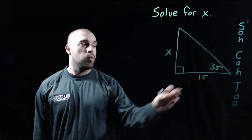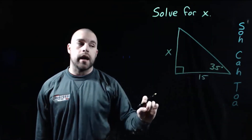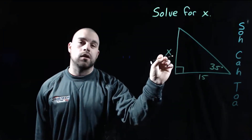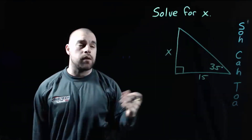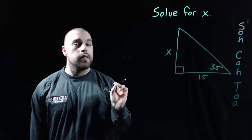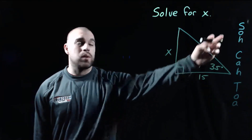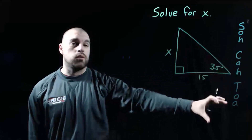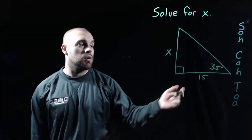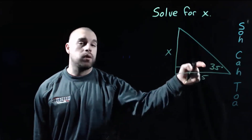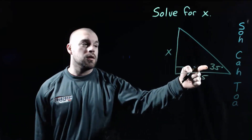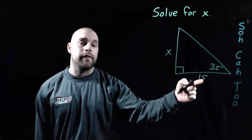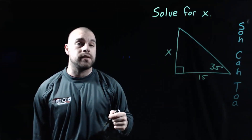In this example, we're given a triangle with a 35-degree angle. We know the bottom side is going to be 15. We're going to try to find this vertical straight up and down side. The very first thing we need to decide is which of our trig ratios we're going to use. If we're focusing on the 35-degree angle, the X is the opposite side and the 15 is the adjacent side.